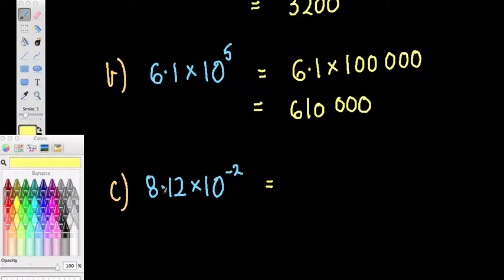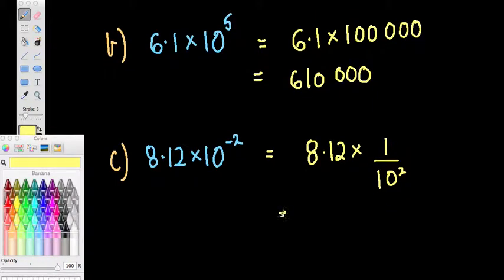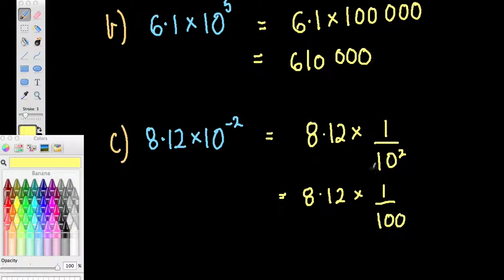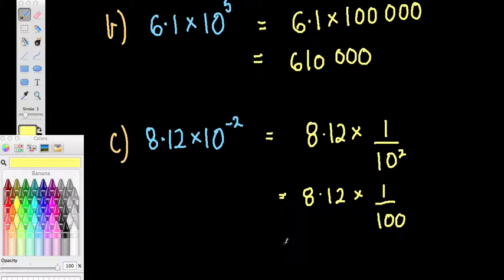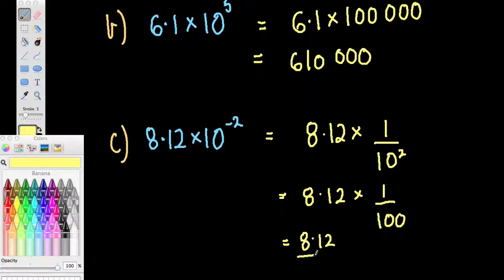And the last one here, we've got a negative index. So how about we write this with our negative indices, like so. So this is 8.12 divided by 100. So that is moving the decimal point two places to the left because the number is getting smaller. You're dividing by 100, it's getting smaller. So have a look. The decimal point was here. 1, 2, we'd have a 0 at the front. There it is.